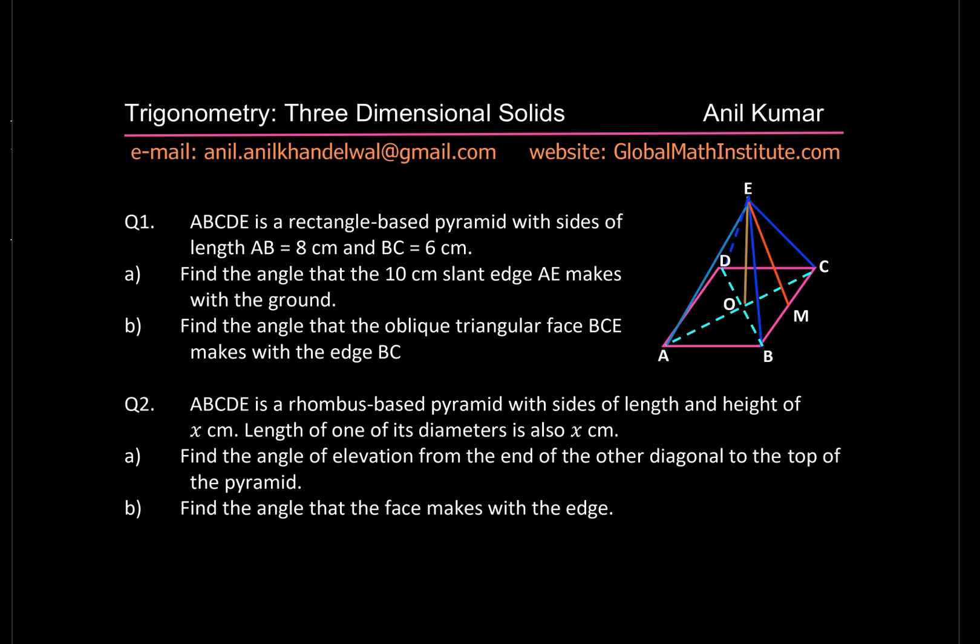The first question: ABCDE is a rectangular base pyramid with sides of length AB = 8 cm and BC = 6 cm. Part A: find the angle that the 10 cm slant edge AE makes with the ground. Part B: find the angle that the oblique triangular face BCE makes with the edge BC. Question two: ABCDE is a rhombus-based pyramid with side length and height of x cm; the length of one diagonal is also x cm. Find the angle of elevation from the end of the other diagonal to the top of the pyramid, and Part B: find the angle that the face makes with the edge.